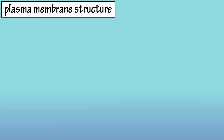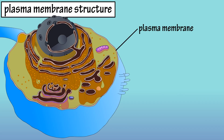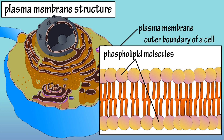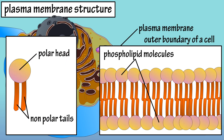Structure of the plasma membrane. The plasma membrane is the outer boundary of a cell. It is composed mainly of a double layer of phospholipid molecules that are held together by chemical attractions. These phospholipid molecules have a polar hydrophilic water-loving head and two non-polar hydrophobic water-fearing tails.